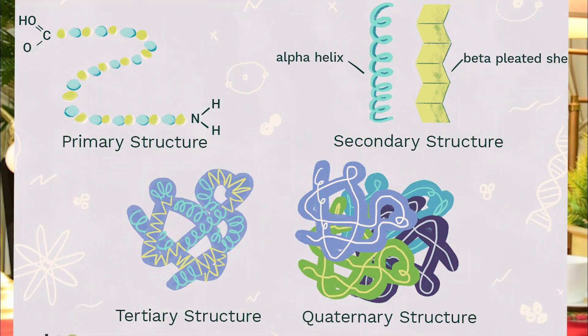These amino acids are linked together. There are 4 main protein structures: primary structure, secondary structure, tertiary structure, and quaternary structure. Now we will look at all of them.